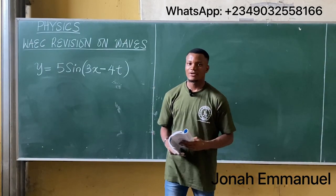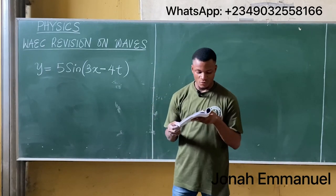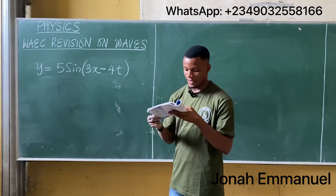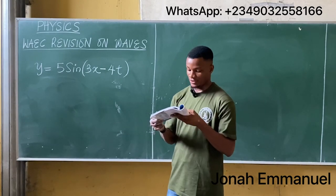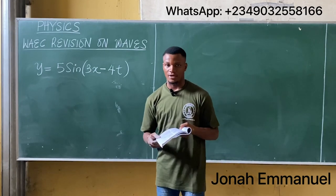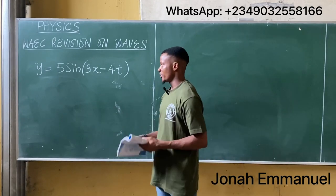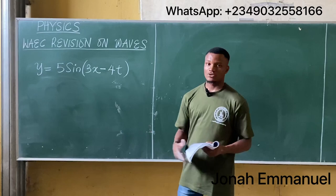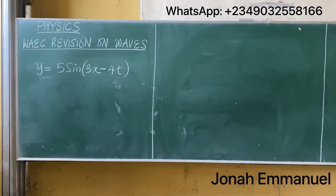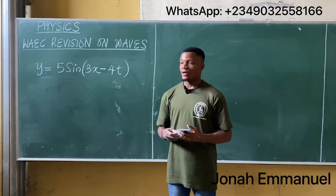Let's look at another past question on waves. This one says: given the wave equation y = 5 sin(3x − 40t), find the frequency and period of the wave.